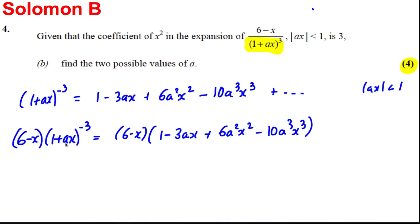Replacing this by the binomial expansion in part A. Now we've got to consider the x squared term and we're told that it's equal to 3. Now how do we get an x squared term here? Well we get an x squared term by multiplying 6 by this here, and we get another x squared term by multiplying negative X by negative 3AX. They're the only ways of getting an x squared term.